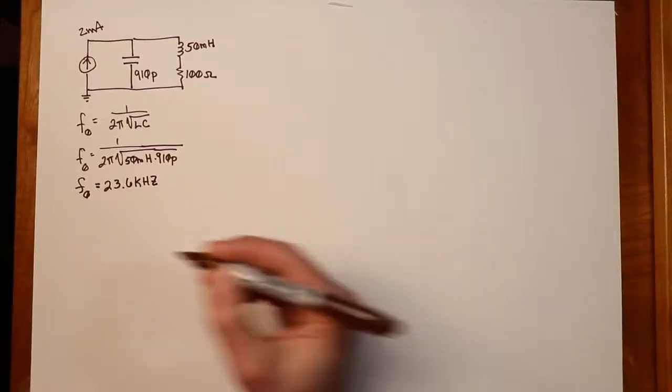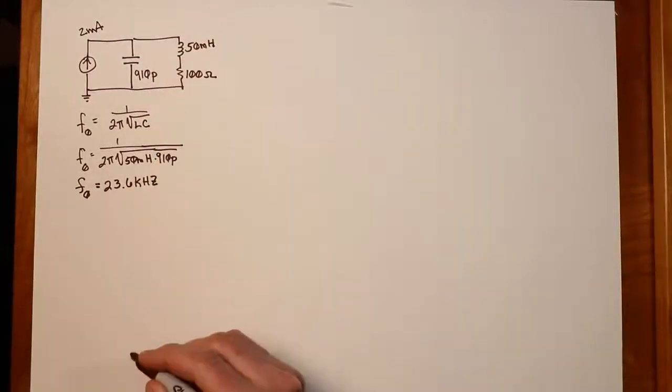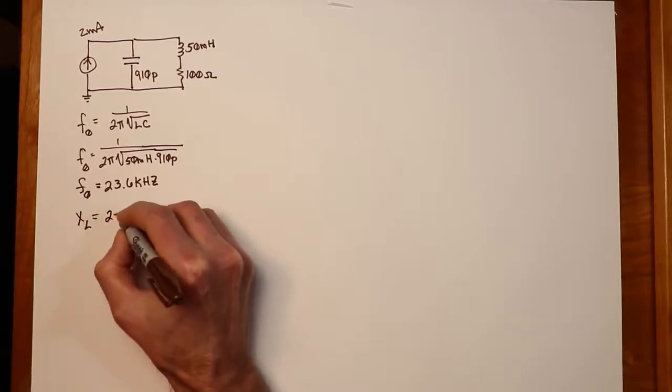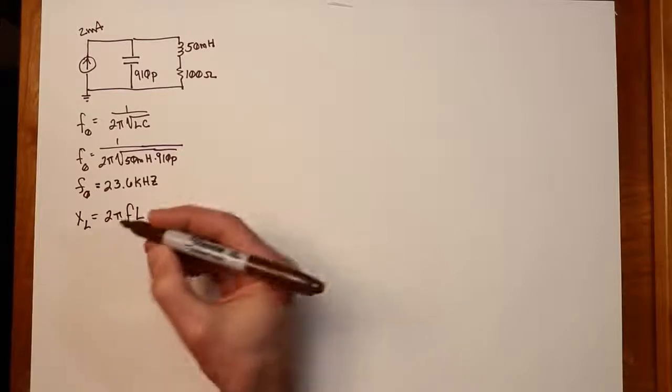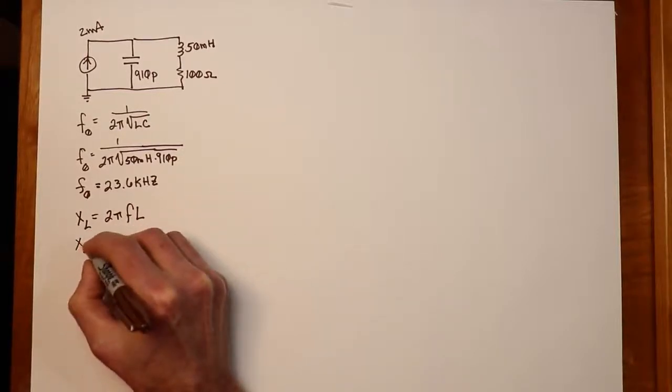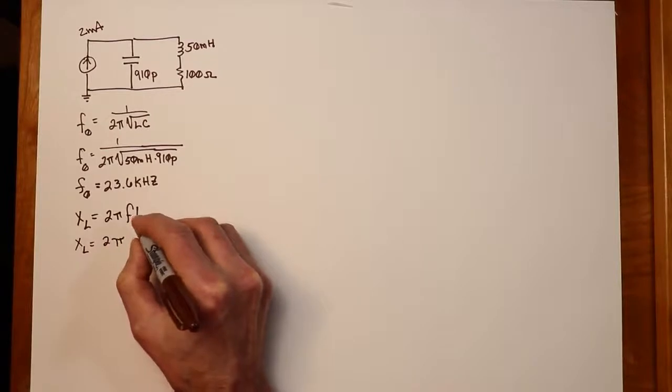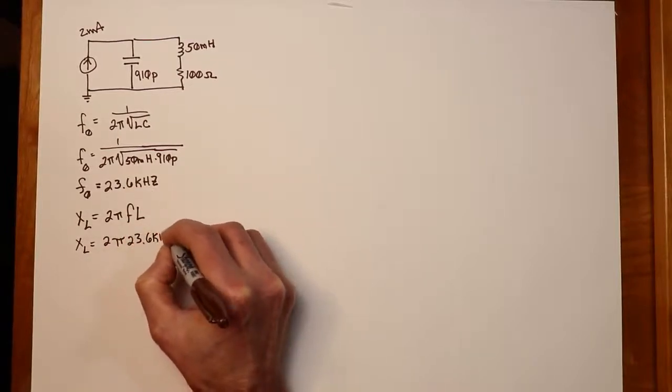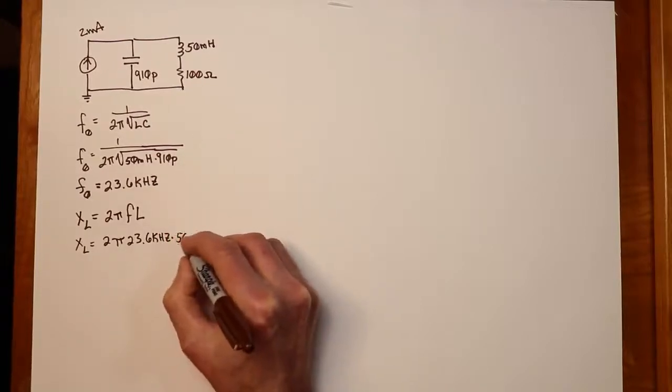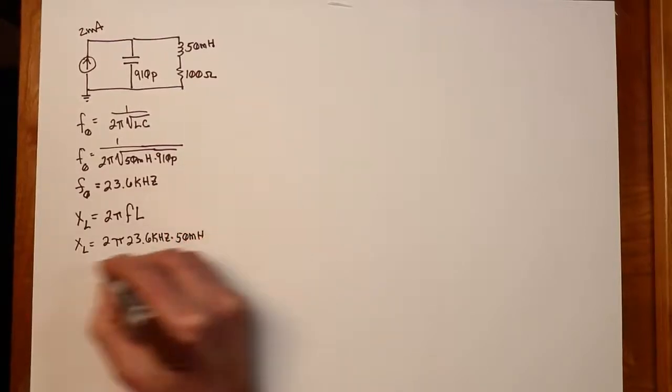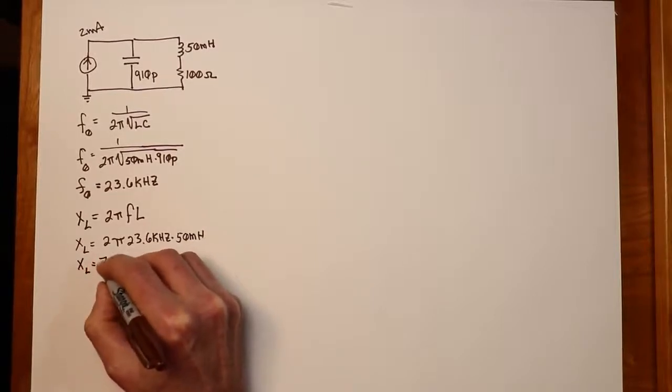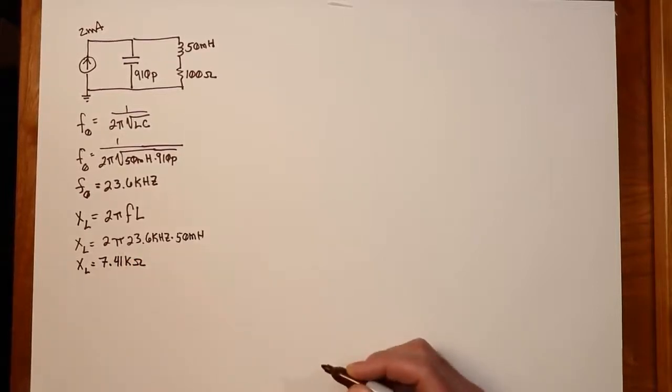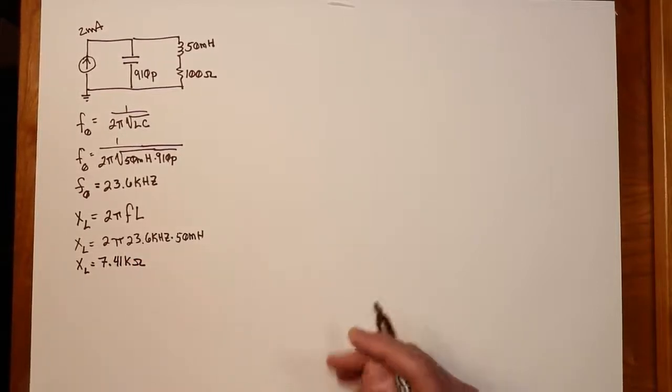From this, we can figure out the reactance of our inductor. We know that XL is 2πFL as far as its magnitude is concerned. So we'll just put the values in here. 2π frequency's 23.6 kHz and L is the 50 millihenries. So the magnitude of XL is 7.41k ohms.